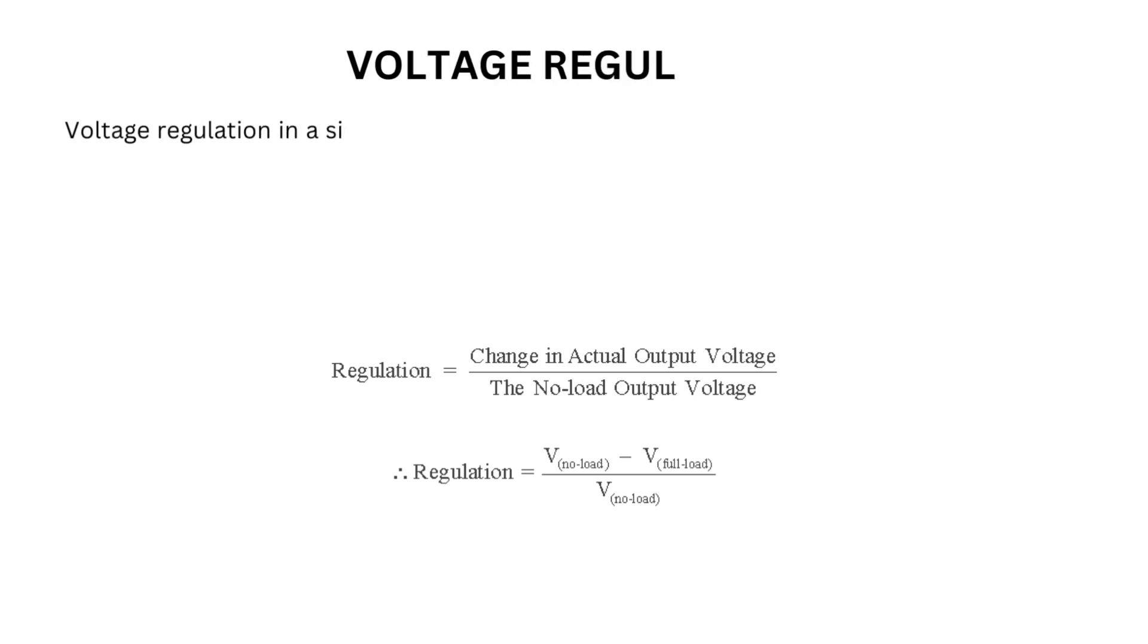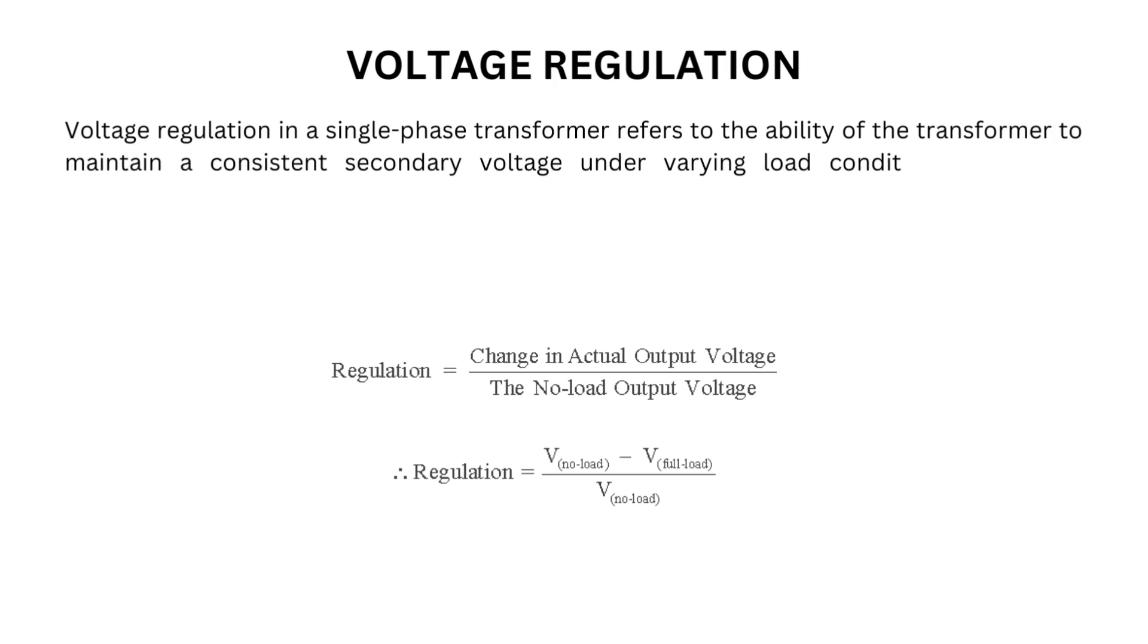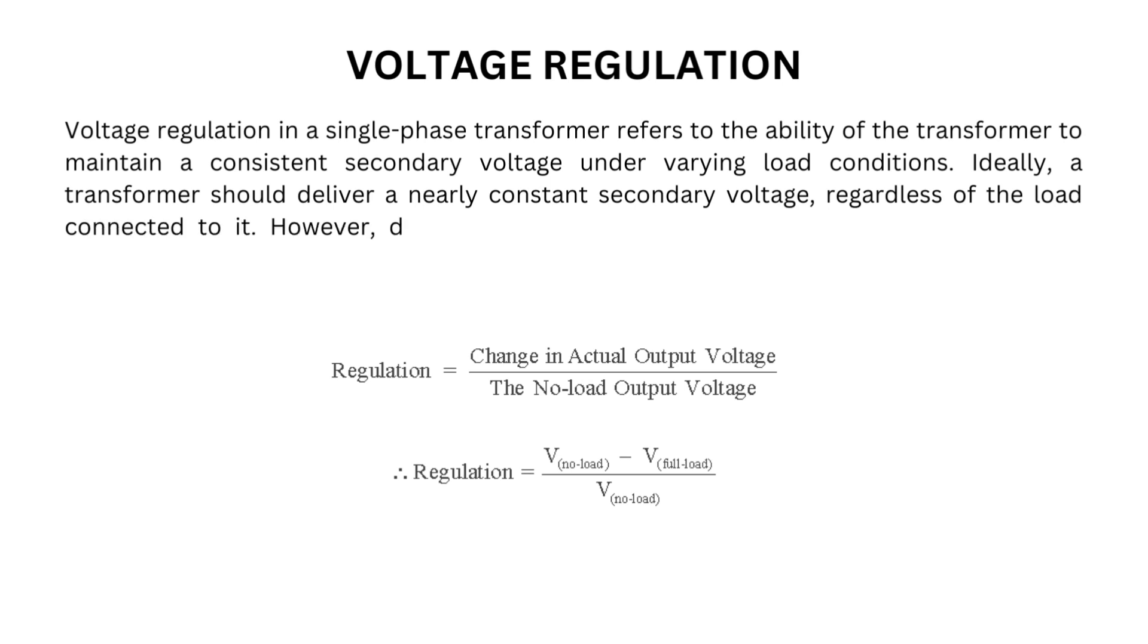Voltage regulation in a single-phase transformer refers to the ability of the transformer to maintain a consistent secondary voltage under varying load conditions. Ideally, a transformer should deliver a nearly constant secondary voltage, regardless of the load connected to it. However, due to various factors such as resistance,